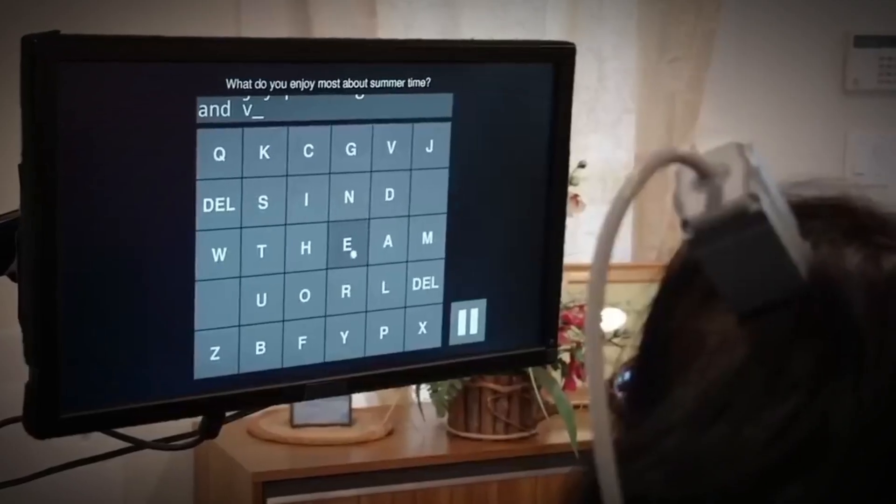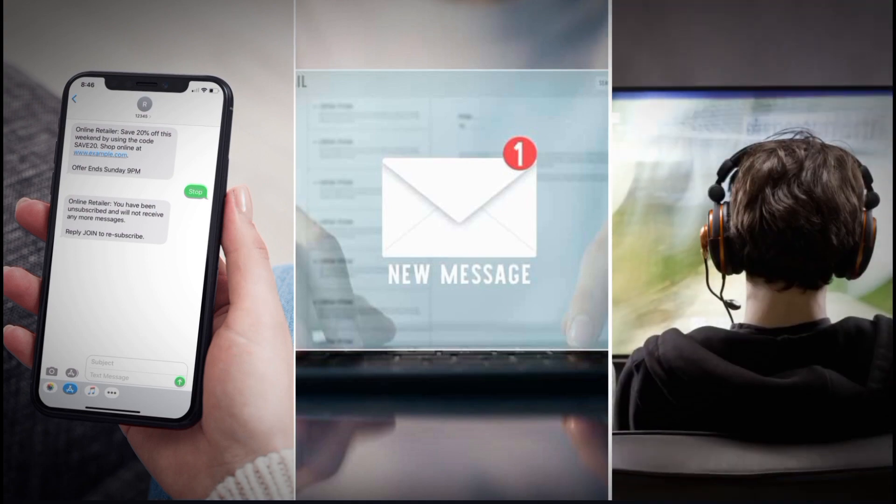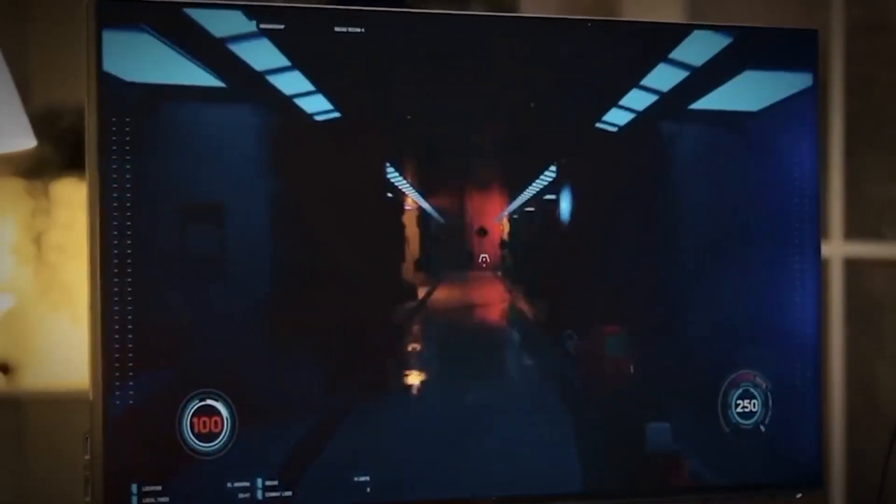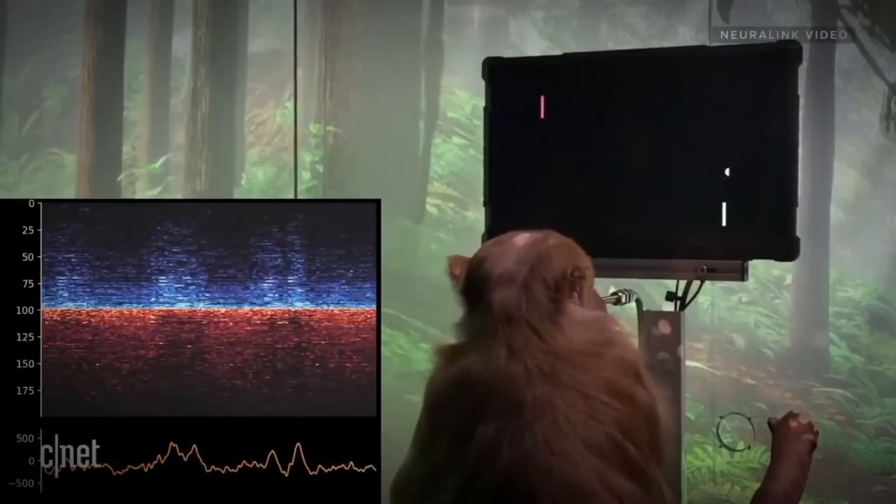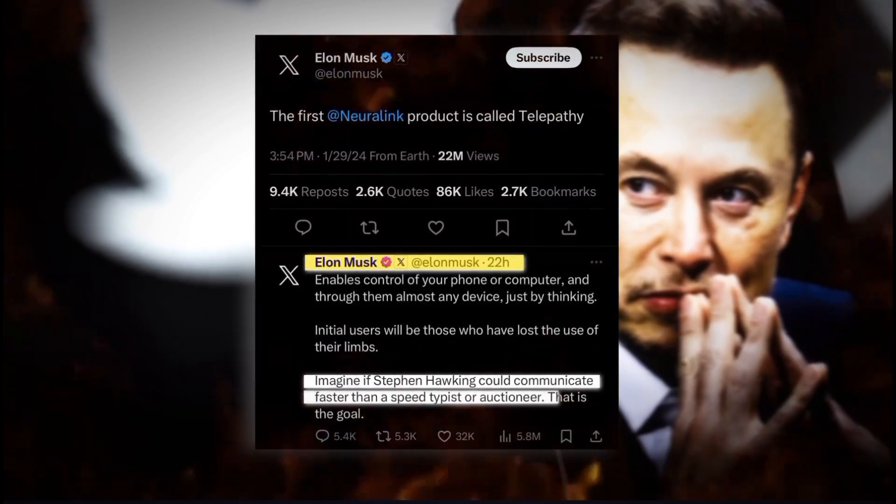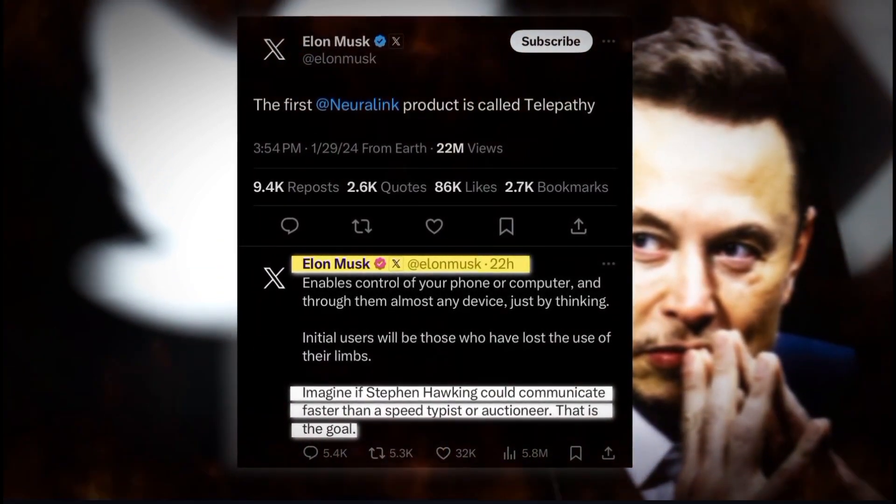So those unable to move their arms due to injury or illness could text, email, play games or anything, by thinking alone. Brain power replaces body power. As Musk says, imagine if Stephen Hawking could communicate faster than a speed typist or auctioneer. That is the goal, Musk said in a recent post on X.